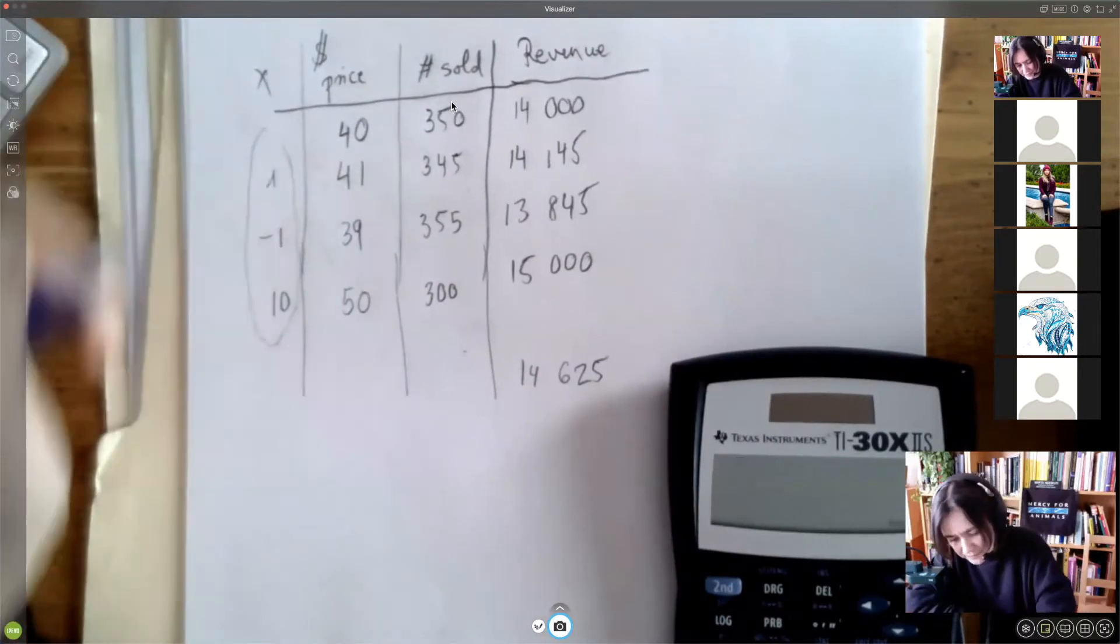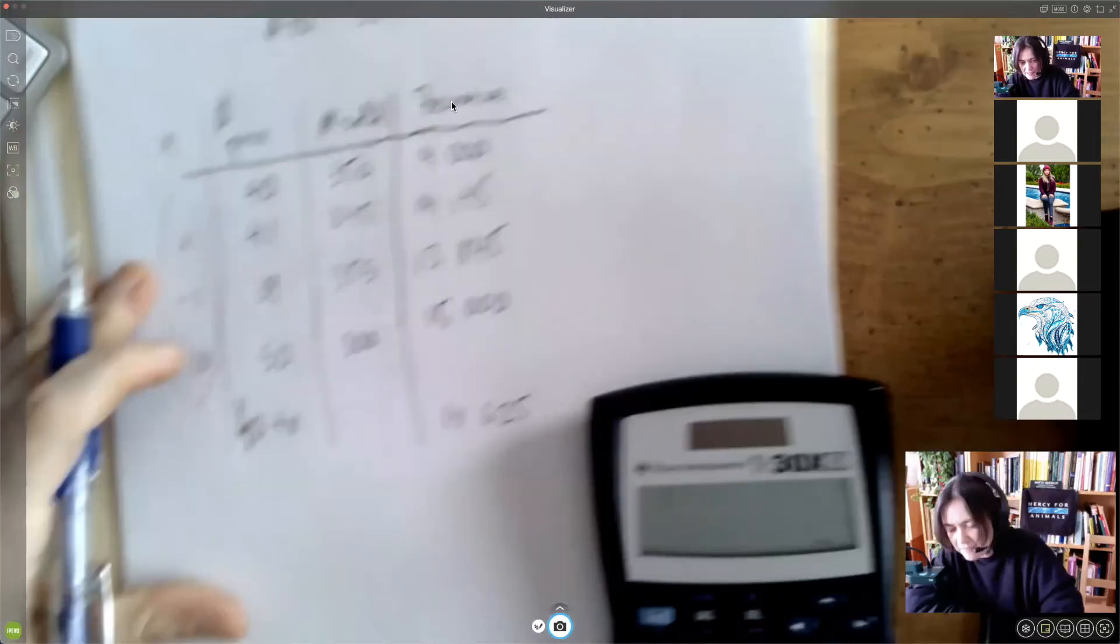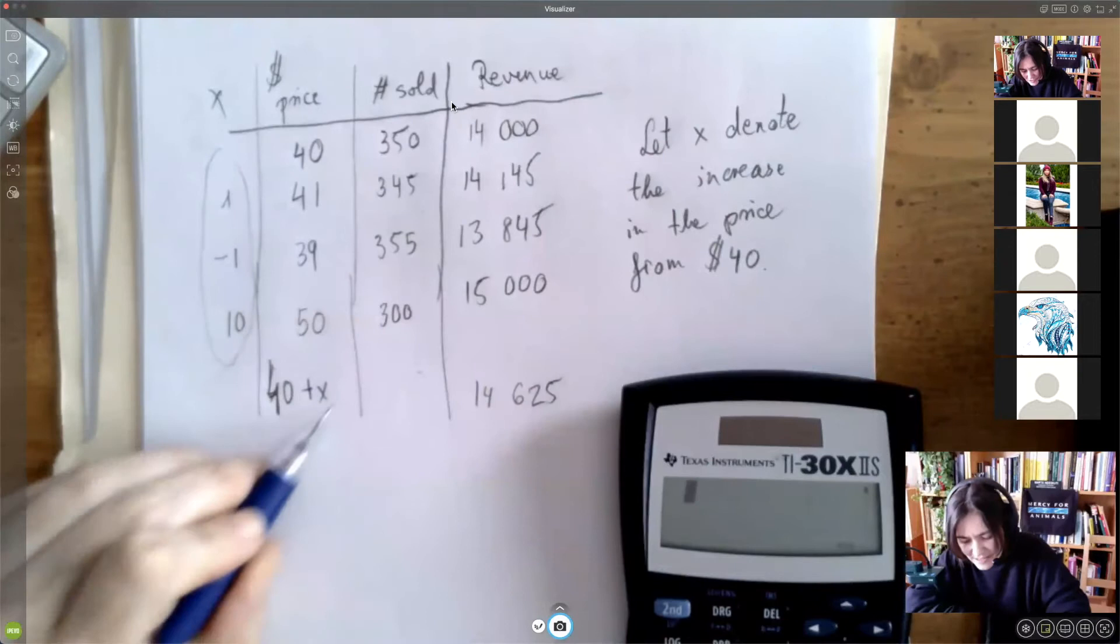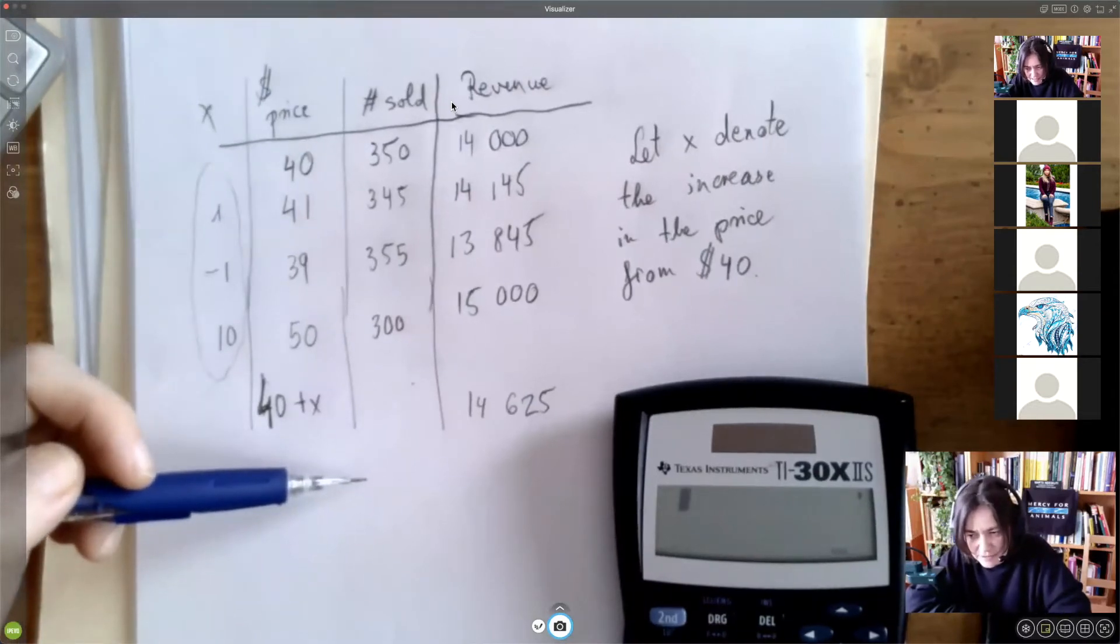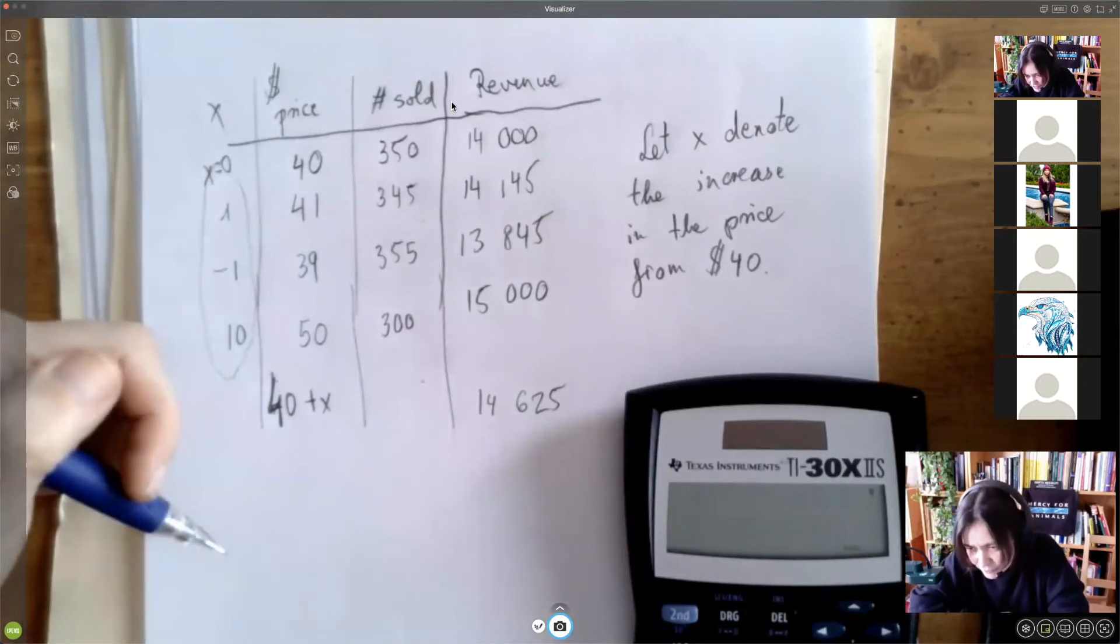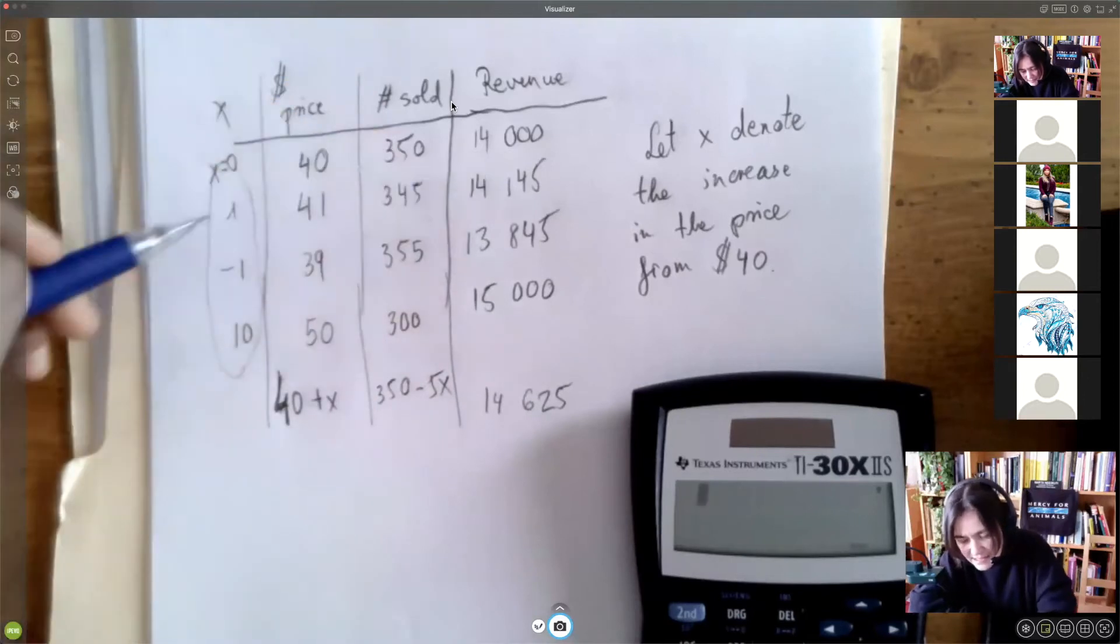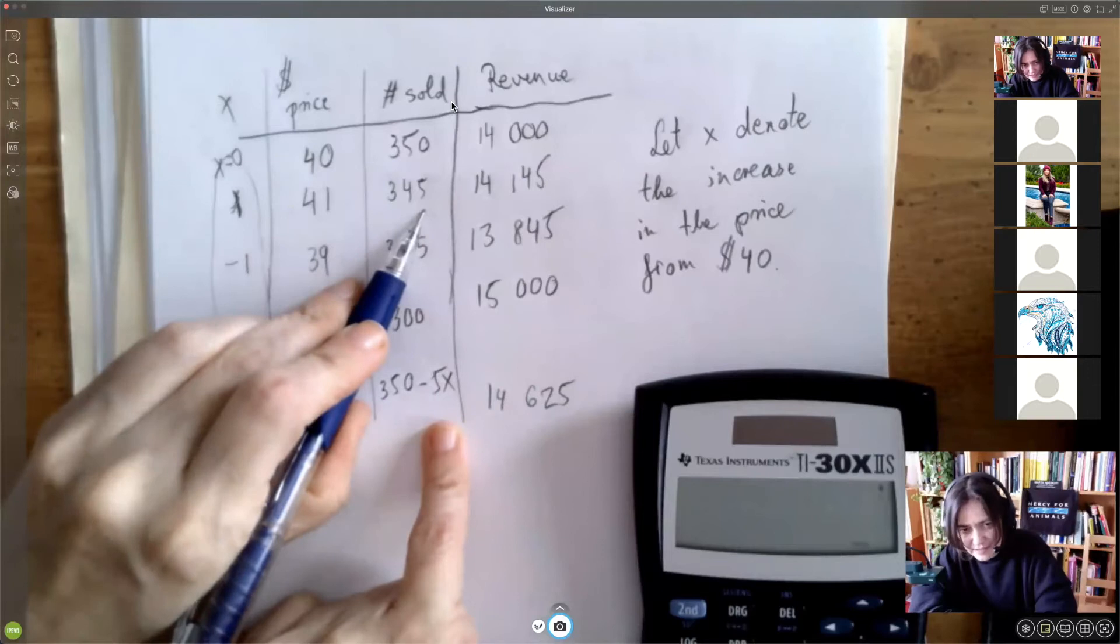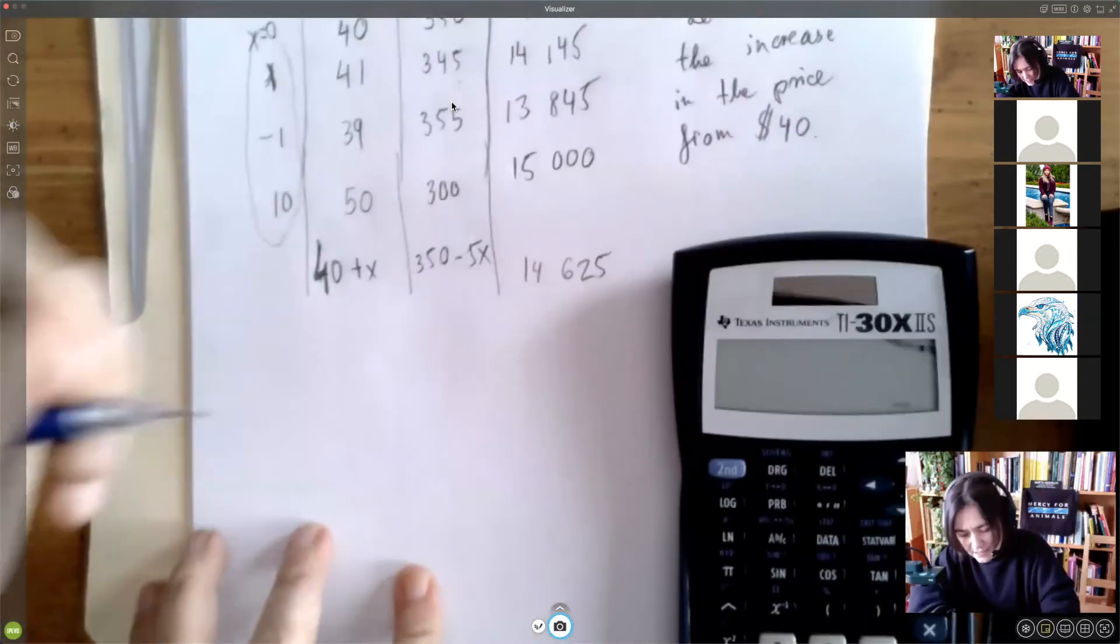If that is our X, then the price should be $40 plus X, right? So, and we should always commit in writing. So let X denote the increase in the price from 40 bucks. Then the price is going to be 40 plus X. And the hope is that it's also not that difficult to express how many we are selling. Any ideas? How many are we going to sell in terms of X? Here, X equals zero. If we raise the price ticket by 1,000 bucks, we're going to have negative number of customers because we're going to lose 5,000 customers from 350. It's really 350 minus 5X. And these lines are kind of good because you can test your formulas. If X is 1, then 350 minus 5X is 345, right? And if X is 10, then this is 350 minus 5 times 10.